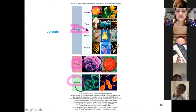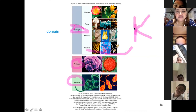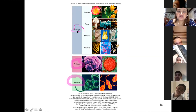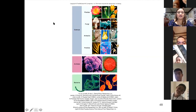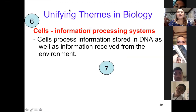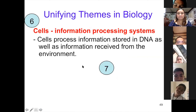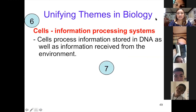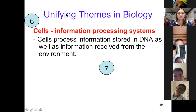The kingdoms are subdomains under the domains. The sixth unifying theme is that information is stored in DNA — cells as information processing systems, with programmation stored in DNA as well as information.